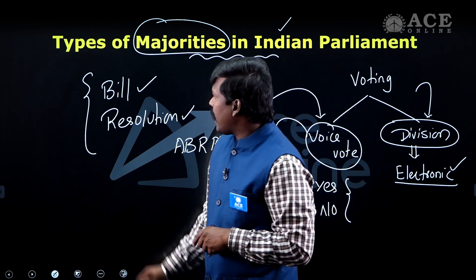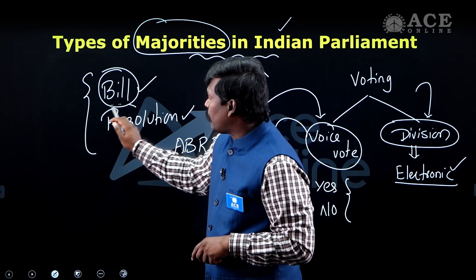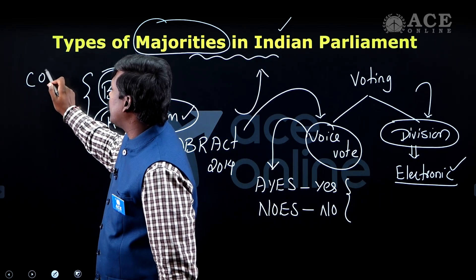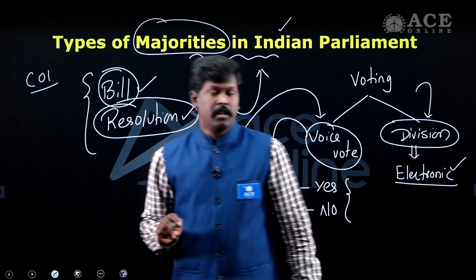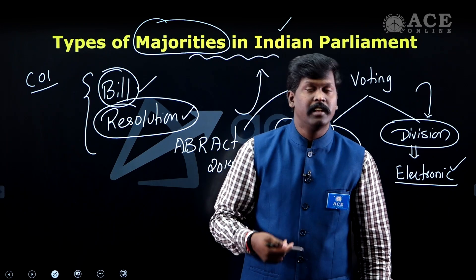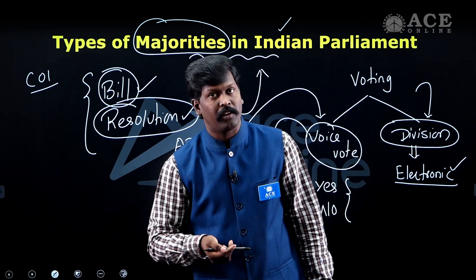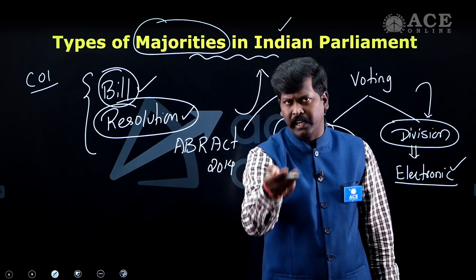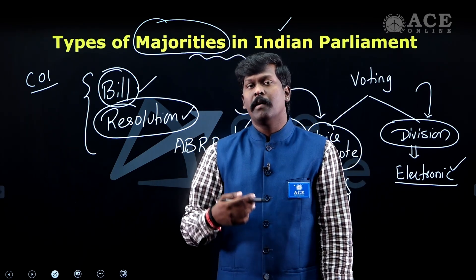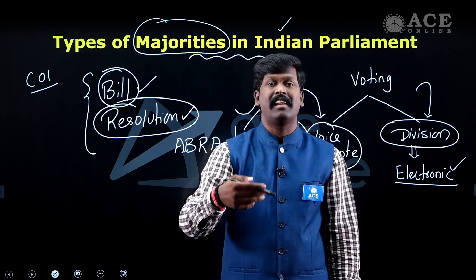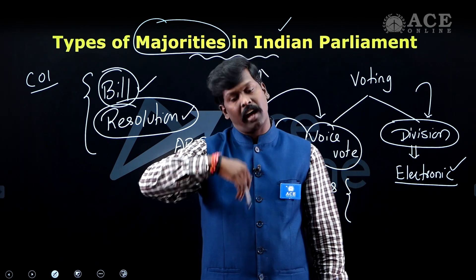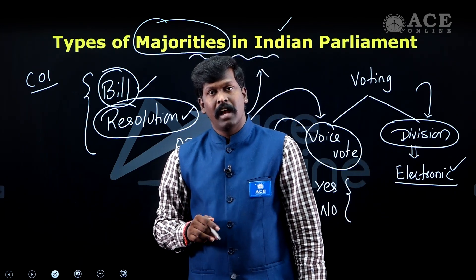The subject matter of the votes determines which type of majority is required. For example, Article 3 deals with state reorganization and requires a simple majority. Article 61 deals with the President of India's impeachment resolution and requires a special majority.